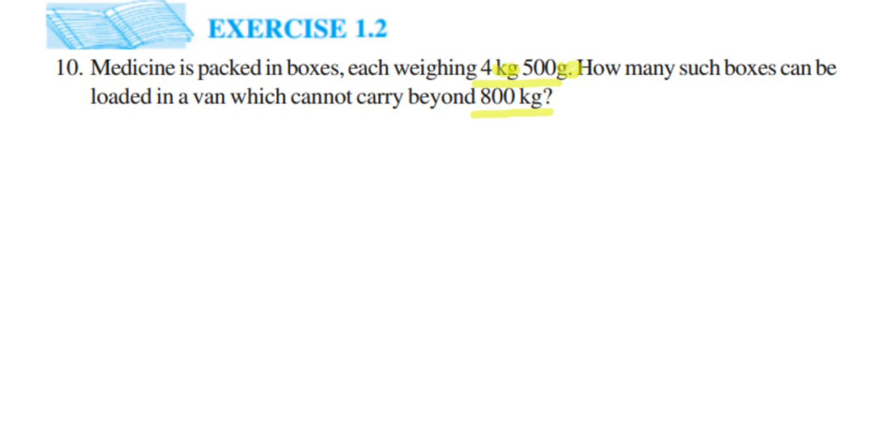Before we solve this, we have to make sure that they're all in the same unit. So here we're going to convert kg into grams. We can convert grams into kg, but the answer will come in decimal, so to avoid that we're going to convert kg into grams. How to get this answer? It should not be more than 800 kg, right? So we have to see how many 4 kg 500 grams can come in this 800, so we have to divide it.